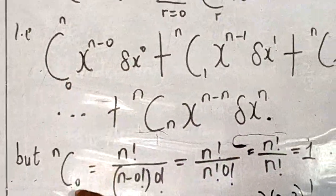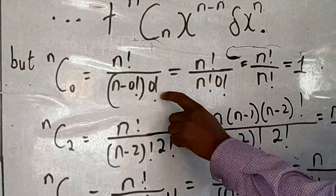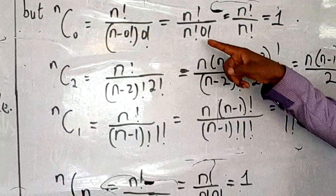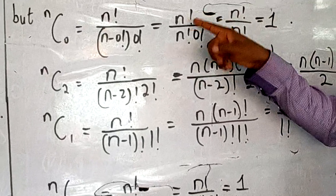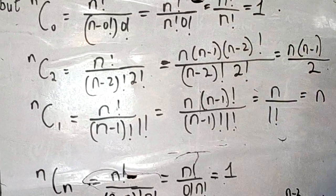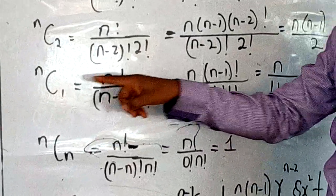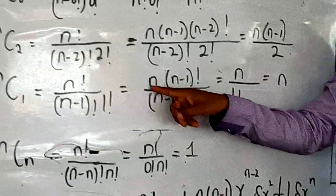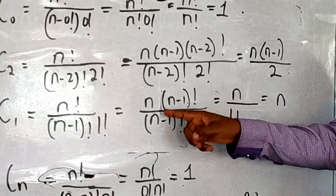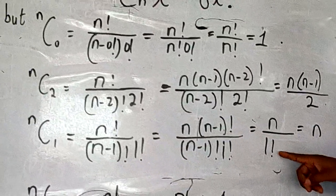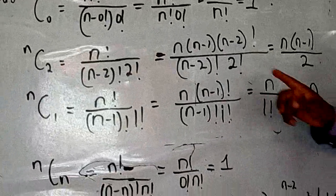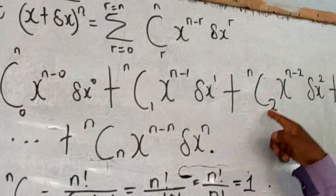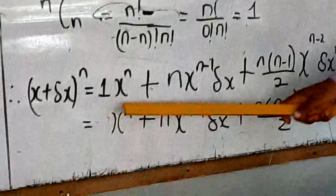Each of the coefficients: n-combination-0 is n factorial over (n minus 0) factorial times 0 factorial. Since n minus 0 factorial is n factorial, we get n factorial over n factorial times 0 factorial, which equals 1. For n-combination-1: n factorial over (n−1) factorial times 1 factorial. Extending n factorial as n times (n−1) factorial, the (n−1) factorials cancel, leaving n over 1 factorial, and 1 factorial is 1, so n-combination-1 equals n. The same logic applies to n-combination-2. Substituting each of these coefficients back into the expression gives us the full expansion.